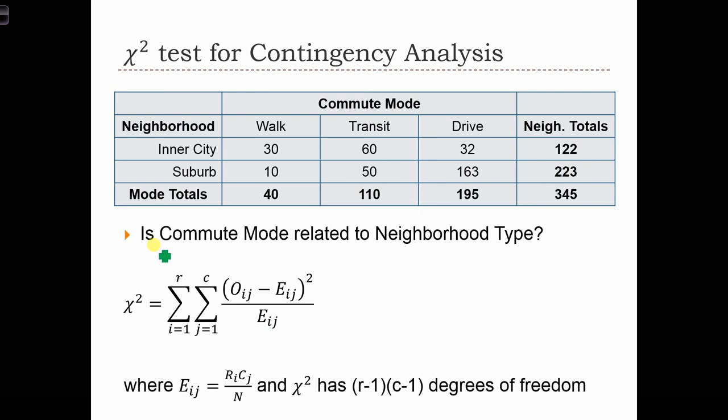In order to answer the question of, is commute mode related to neighborhood type, we're going to compute a chi-squared statistic. In this case, we are now iterating through a double sum.